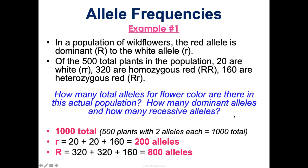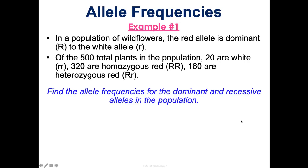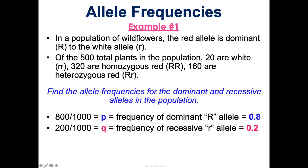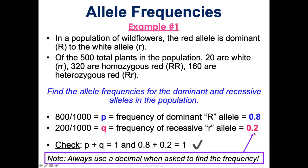Now I can find the allele frequencies. To find allele frequency, it's part over whole. There are 800 dominant alleles out of 1,000 total, so p equals 0.8 — that's the frequency of the dominant allele. 200 divided by 1,000 gives q equals 0.2. You can always double check because p plus q should always equal 1: 0.8 plus 0.2 equals 1, so we're good. If asked for frequency, give a decimal; if asked for percentage, multiply by 100 — so 80% of the gene pool has the dominant R, and 20% has the recessive little r.